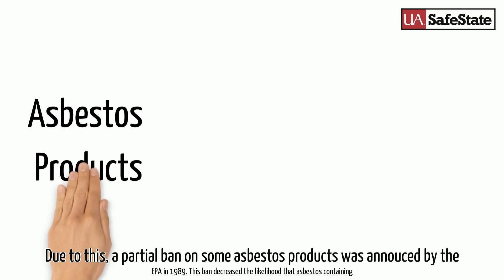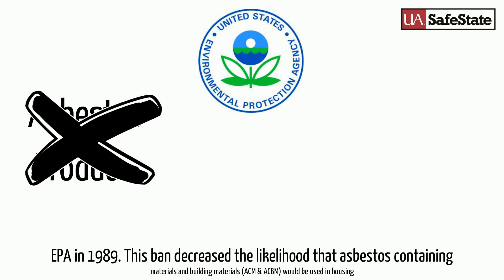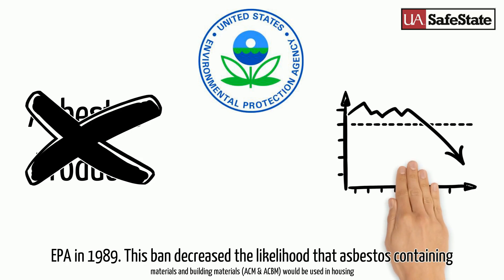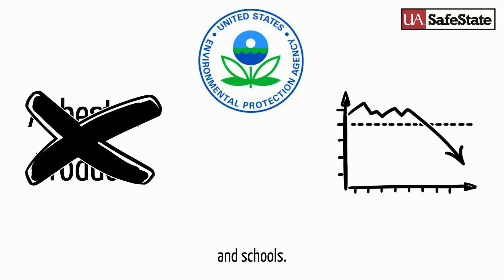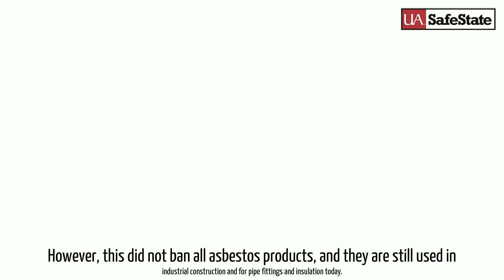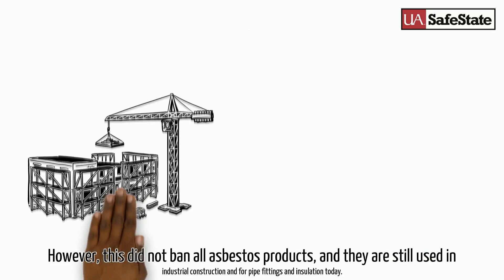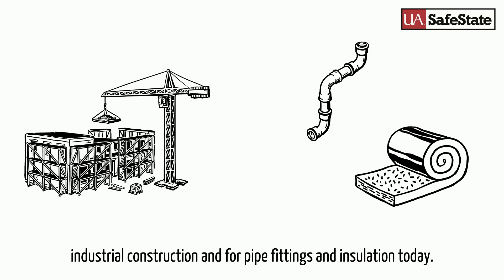Due to this, a partial ban on some asbestos products was announced by the EPA in 1989. This ban decreased the likelihood that asbestos containing materials and building materials — ACM and ACBM respectively — would be used in housing and schools. However, this did not ban all asbestos products, and they are still used in industrial construction and for pipe fittings and insulation today.